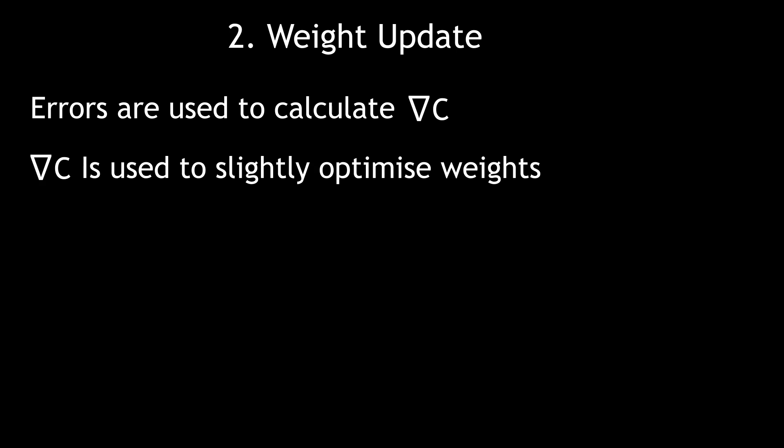Once all of the errors have been calculated, they can be used to calculate the gradient of the cost function. As I mentioned previously, this is used to slightly optimize the weights, usually in an algorithm called gradient descent. The weights are only updated a small amount each time, the rate at which is called the learning rate, unsurprisingly.